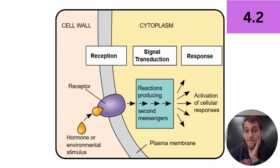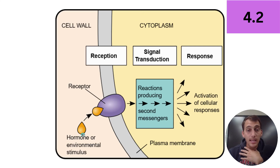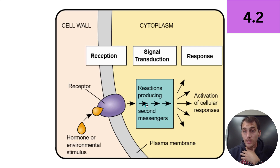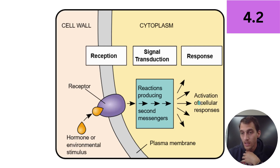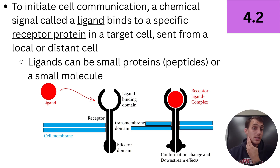Signal transduction can get very, very complicated. Signal transduction pathways are very diverse, and there are lots of different proteins and other molecules involved. But here's the overview: reception means taking a chemical signal and it binds to a protein called a receptor. That receptor causes a whole bunch of reactions that usually happen kind of like a relay race, that will eventually produce the desired response by the cell. A ligand binds to a specific receptor protein in a target cell sent from a local or distant cell.